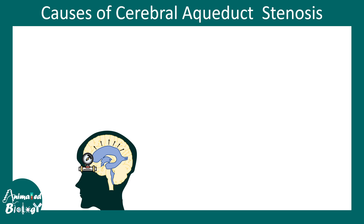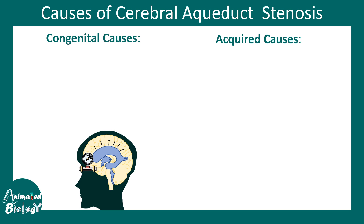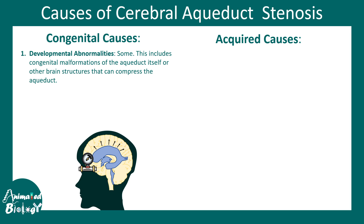Now let's try to understand the causes of cerebral aqueduct stenosis. There could be congenital causes or acquired causes. For example, there could be developmental abnormalities in the cerebral aqueduct itself which lead to an obstruction of the CSF flow.